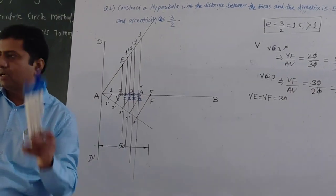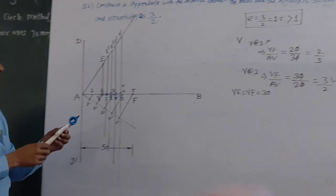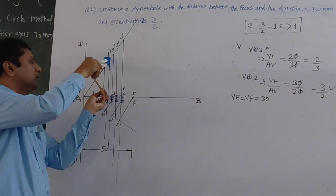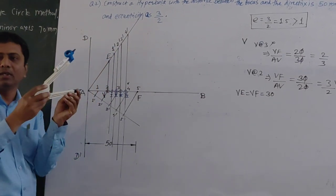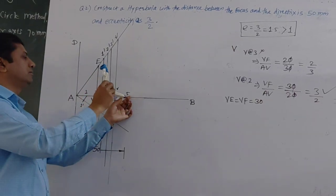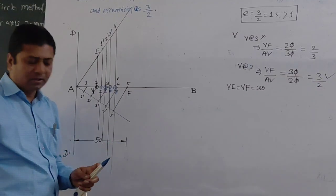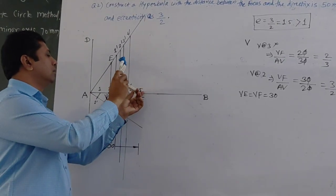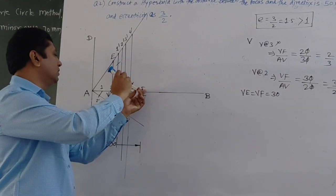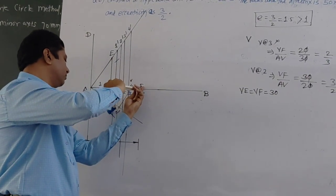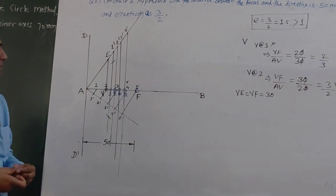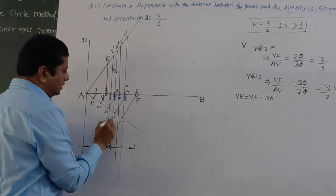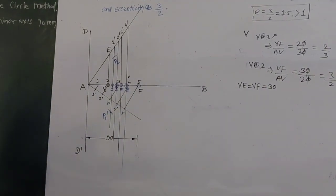Next, the very important step: take the compass and measure the distance from point 1 to 1'. With F as centre, draw an arc which will cut the vertical line through point 1 at the top and bottom, giving points P1 and P1'.